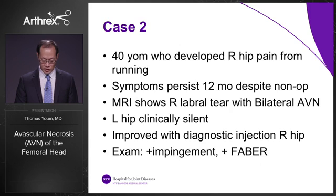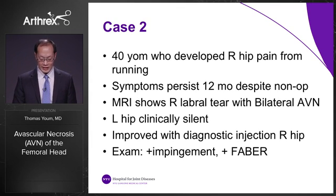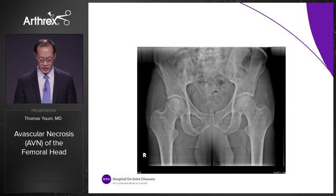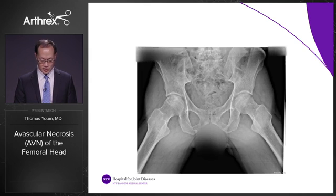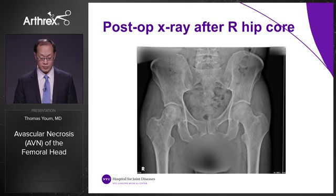Second case: a 40-year-old male who developed right hip pain from running. Symptoms persisted despite 12 months of non-operative treatment. MRI showed a right labral tear with bilateral AVN; the contralateral left hip was clinically silent with no pain. He improved with a diagnostic injection on the right hip and had a positive impingement sign and FABER test. He underwent right hip arthroscopic labral repair with pincer resection and core decompression. Six months later, he underwent left hip diagnostic arthroscopy with core decompression despite being asymptomatic, to prevent progression of AVN. Post-op x-rays demonstrate the core decompression tract.